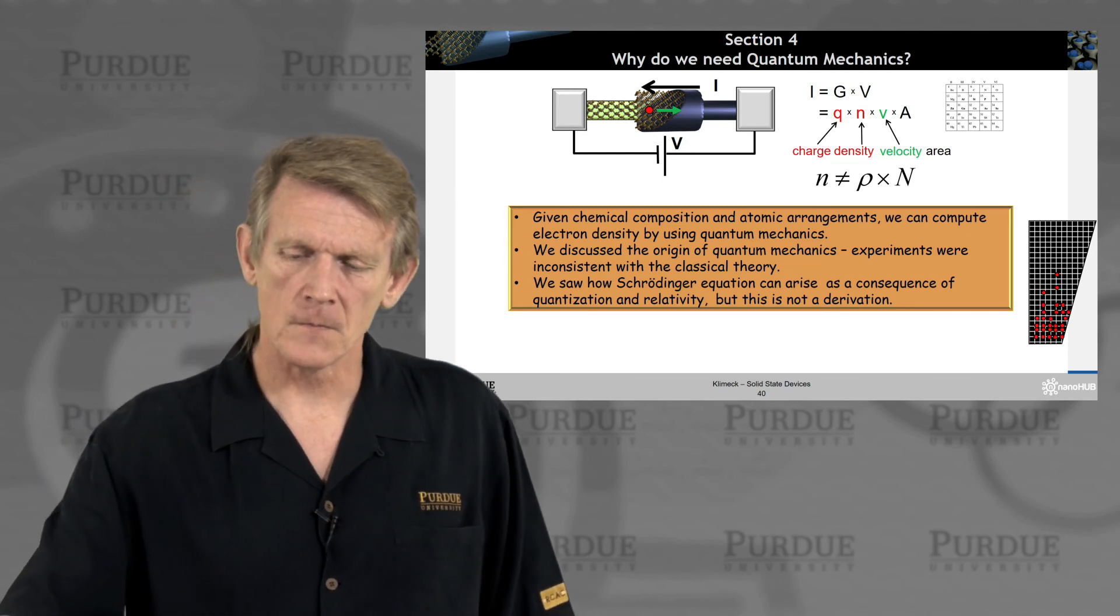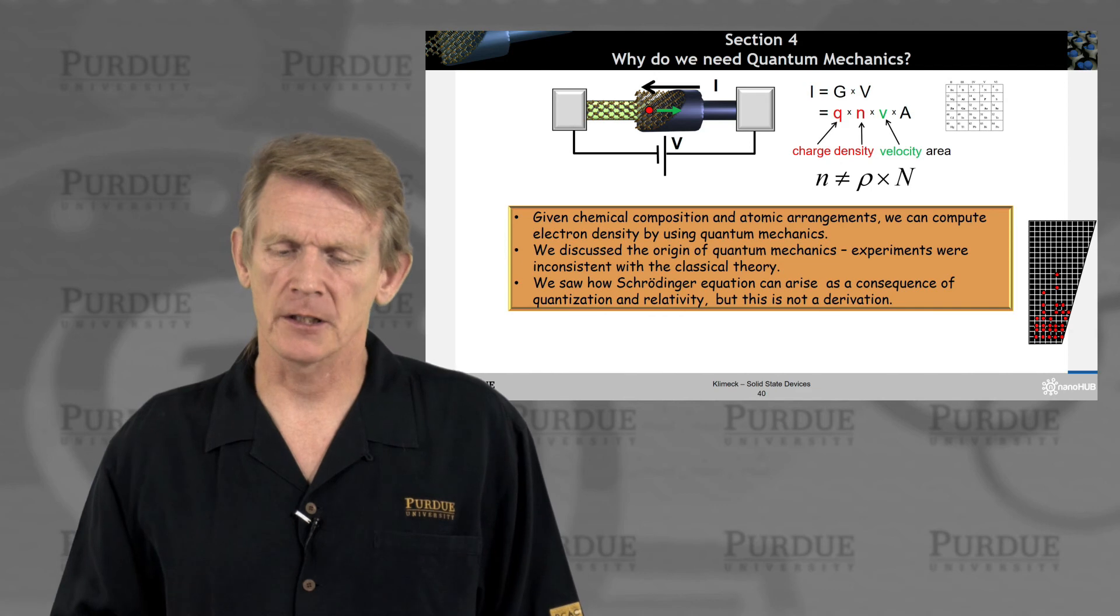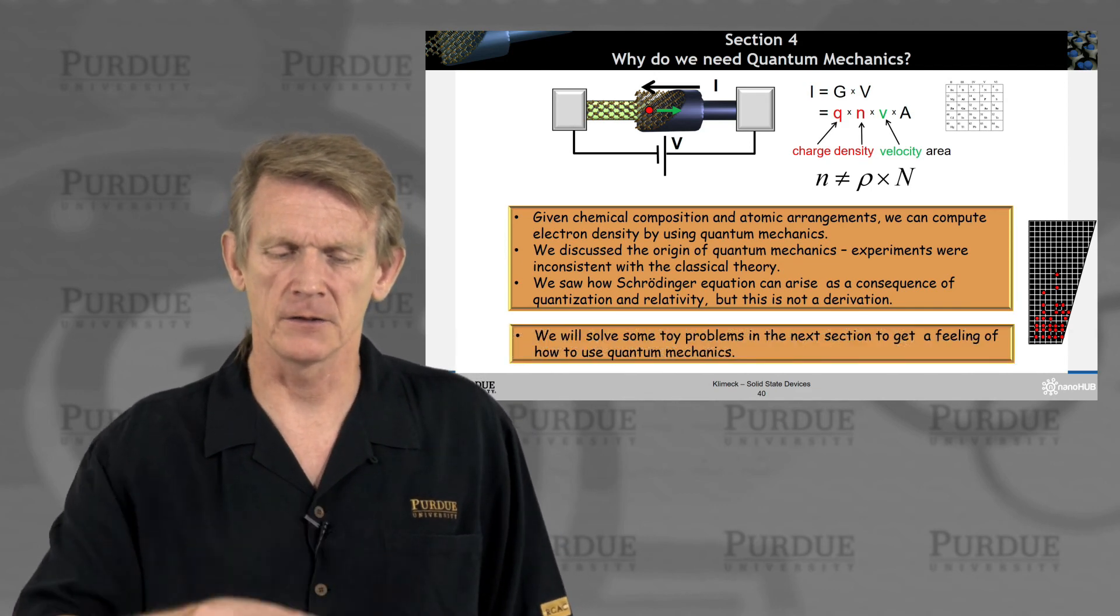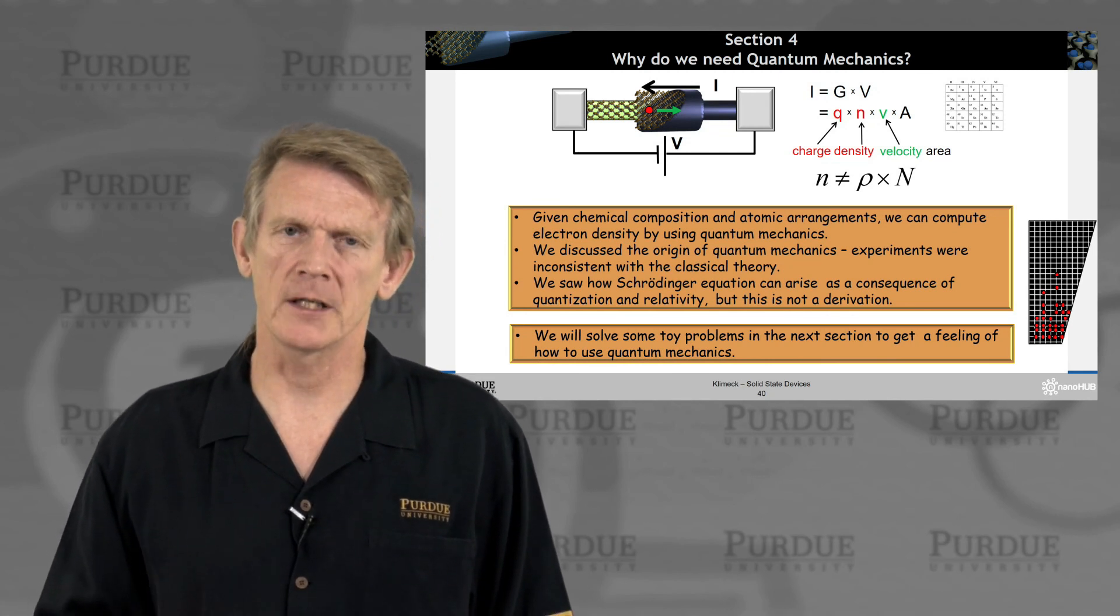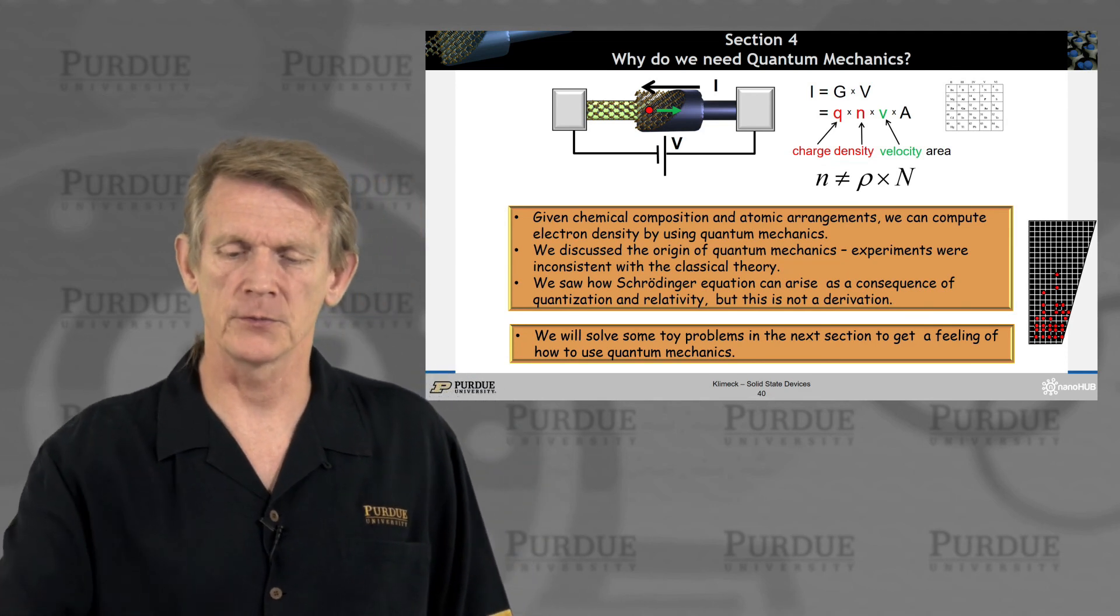In the next section, I'll show how the Schrödinger equation can arise from the consequences of quantization and relativity. In sections 5 and 6, we'll be calculating some concrete examples of quantum mechanical problems.